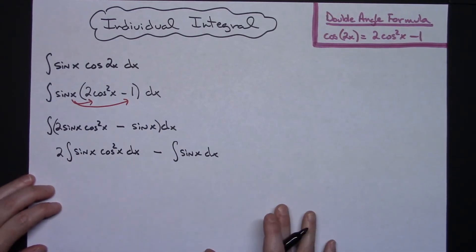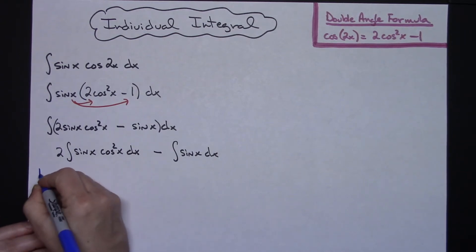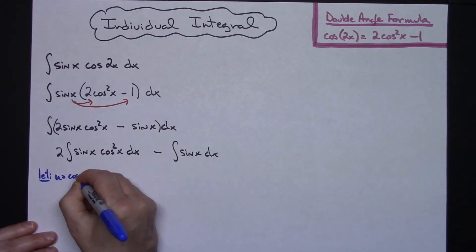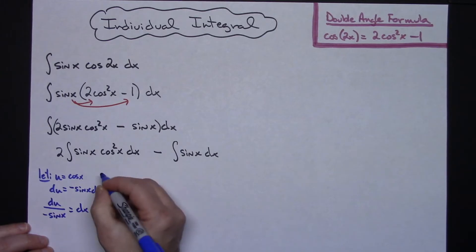Now the one on the left is going to work out real nicely with just a basic u substitution. So I'm going to let my u be cosine x and then that means du is going to be negative sine x dx. If I solve all the way down for dx I'll have du over negative sine x for my dx.